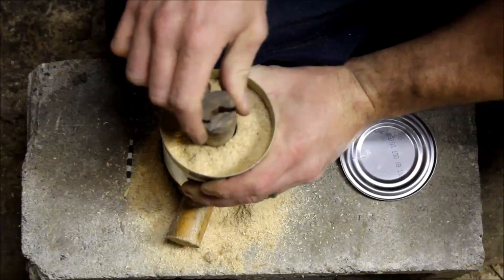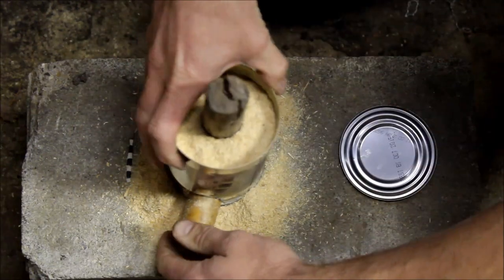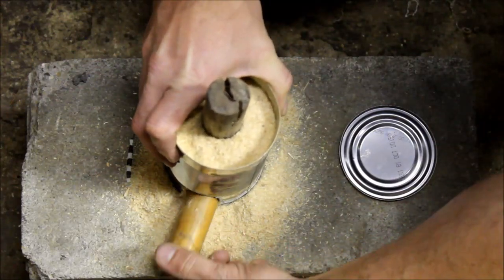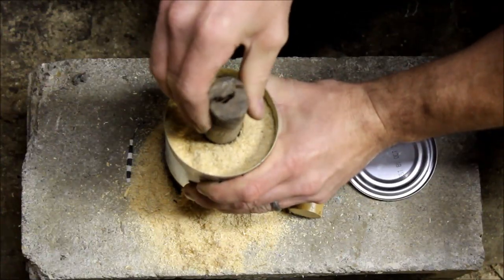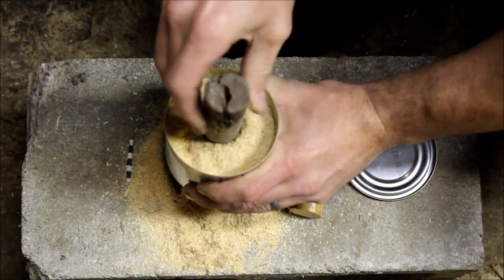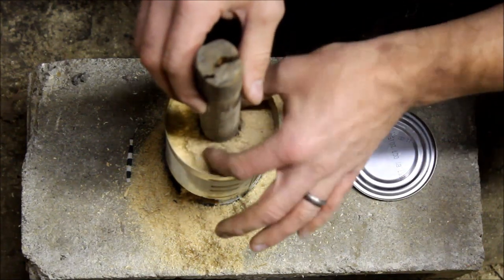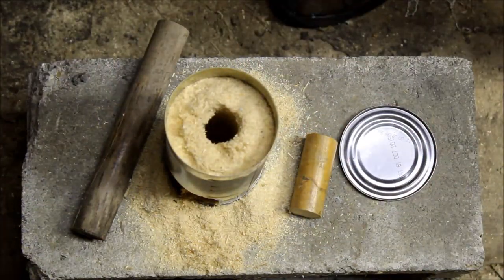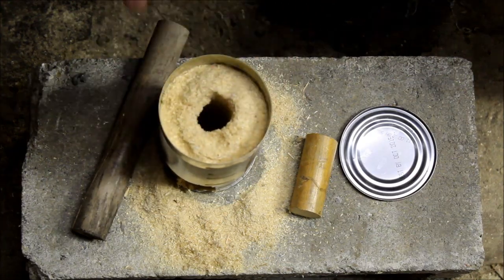But when I take this out, I kind of wiggle the dowel around, get it loose, and I do the same thing for the bottom one, and take it out. I do it slowly because I don't want everything to collapse on me. And that should leave you with a nice hole on the inside, should give you a hole on the side too. And that's pretty compact.